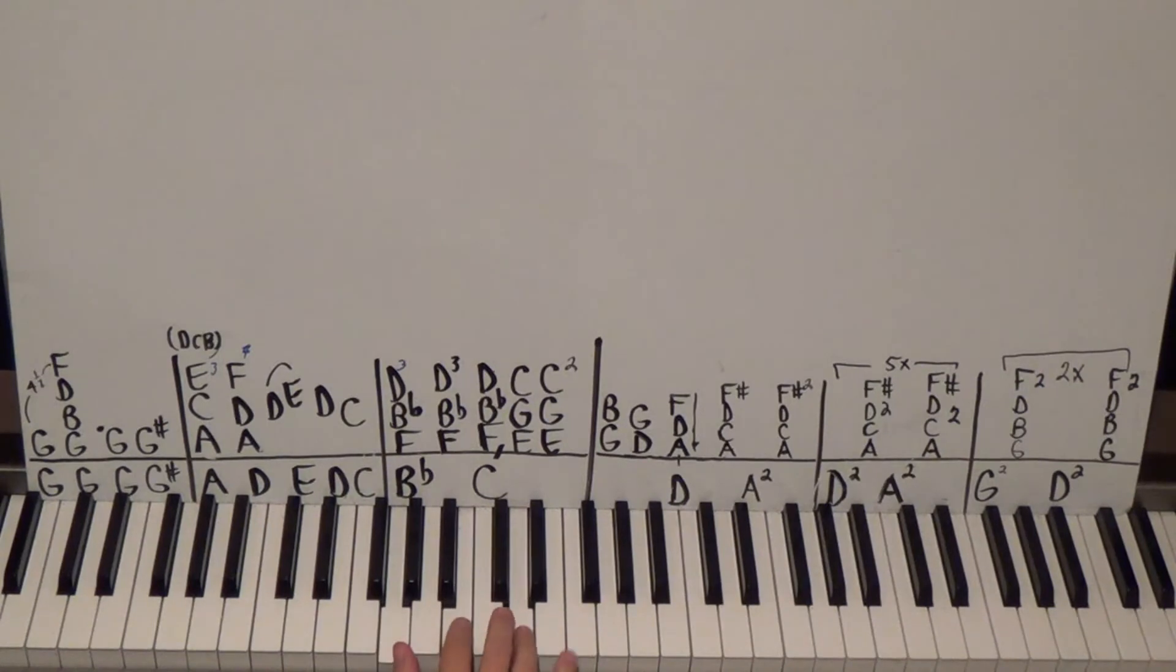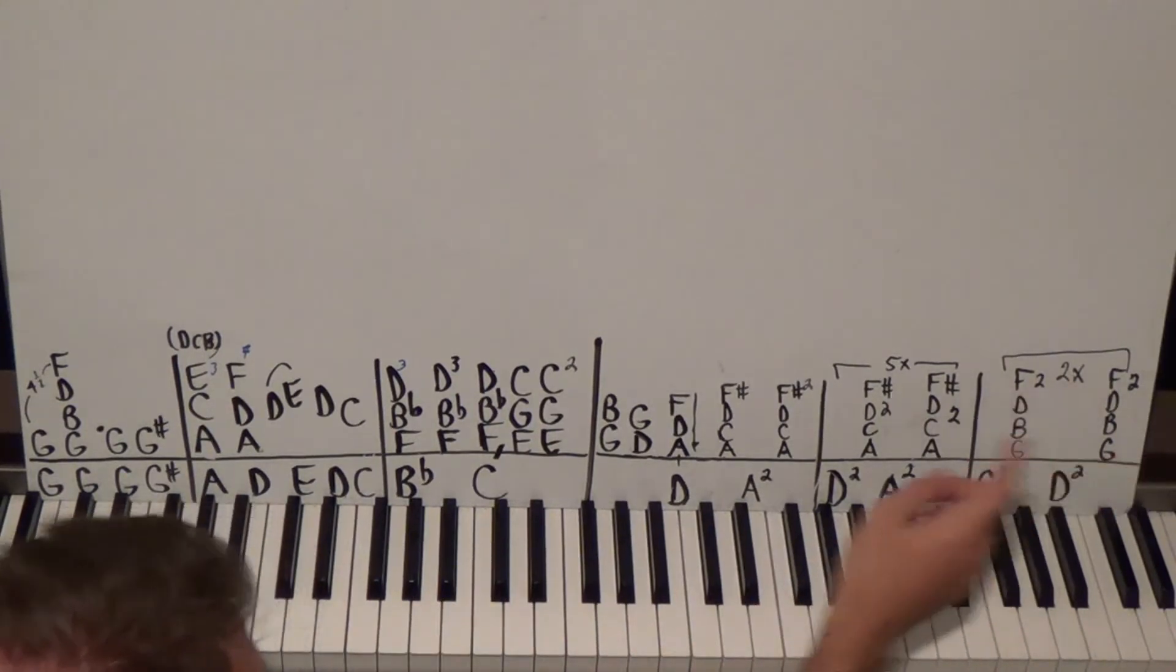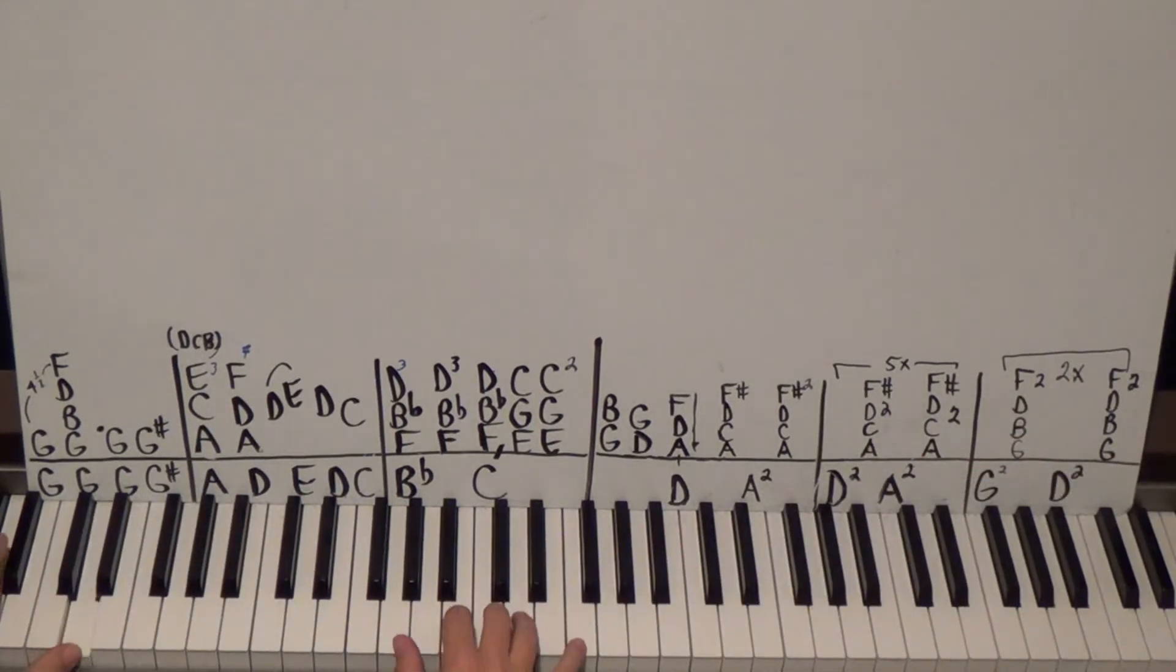So G-B, D-F, left hand on a G octave. Left, left, right, right, left, left, right, right. We do that only two times - one, two. There's your free part one, and then we'll do the rest on the website.